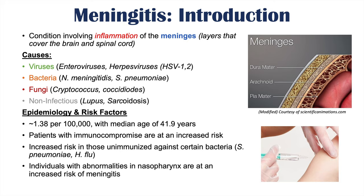Most often, infective organisms infect the meninges through the nasopharynx — they traverse the nasopharynx and get into the meninges to cause meningitis. Individuals with abnormalities in the nasopharynx, whether congenital or from trauma, are at an increased risk for getting meningitis, and that is the reason why.